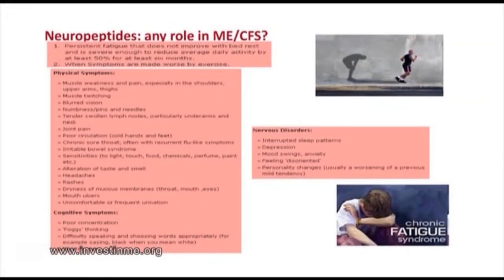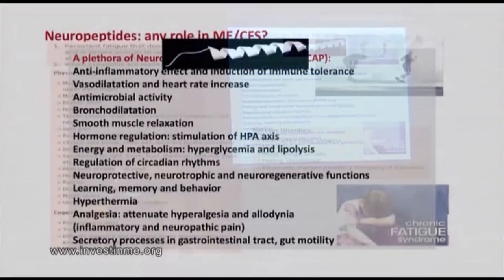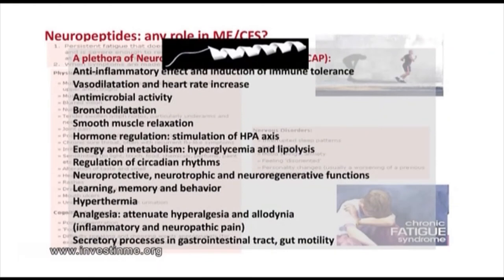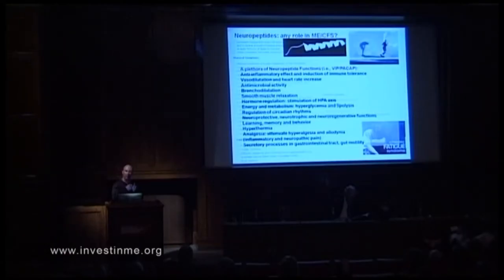What about ME? Do we have any chance with VIP or the related neuropeptides? In addition to the anti-inflammatory effect and induction of immune tolerance — relevant if ME is an autoimmune or autoinflammatory disease — there are other functions of these neuropeptides that could ameliorate ME symptoms. These include antimicrobial activity: neuropeptides have been shown to physically interact with bacteria and parasites and kill these pathogens directly.